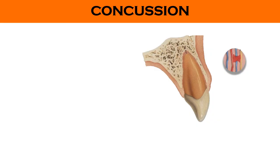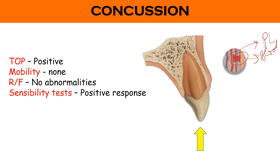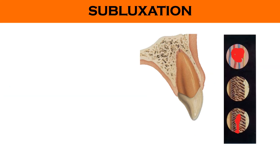In case of concussion, the impact can result in hemorrhage and edema of the periodontal ligament fibers. Because of this, when we percuss the tooth it shows tenderness on percussion. However, the periodontal ligament fibers are intact, so there is no mobility — the tooth is firm. If we take a radiograph, we do not see any abnormality, and when we conduct the pulp test the result is a positive response.